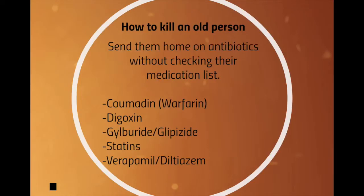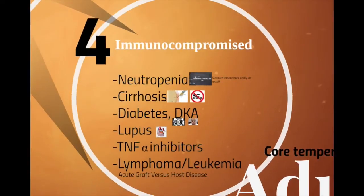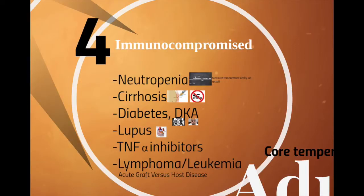Last but not least, immune-compromised fever. For neutropenia, we use oral temperature measurement — 38°C over an hour, or 38.3°C at one time — because of the concern for causing rectal mucosal injury and migrating bacteria into the peritoneum. There's an old surgical joke that there are only two reasons not to do a rectal exam: the patient doesn't have an asshole, or you don't have a finger. And the third reason, if you're managing neutropenia, is neutropenia itself.